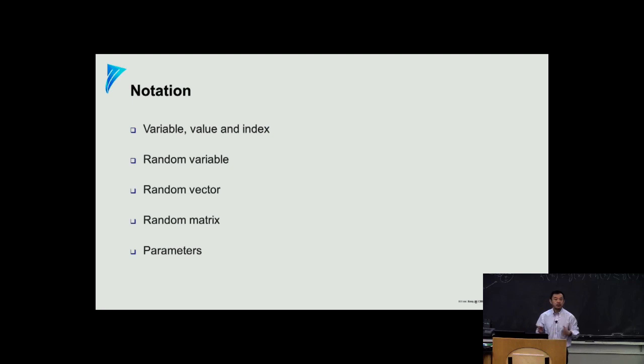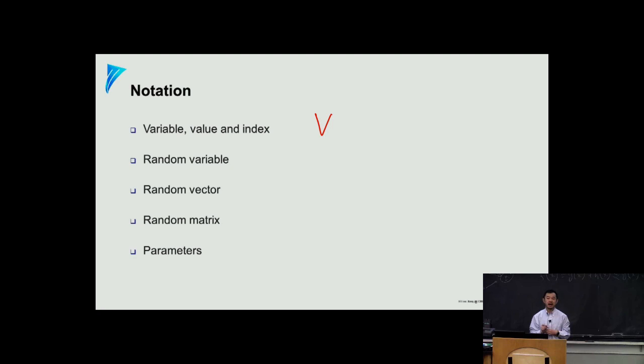We are going to deal with variables. The variable itself is a very overloaded word. Let's introduce the notation V first — this is a variable, and I capitalize it. Typically variables are represented by a capitalized English character. Then there are superscripts and subscripts, say I, meaning that this variable is multi-dimensional and I denotes the i-th dimension.